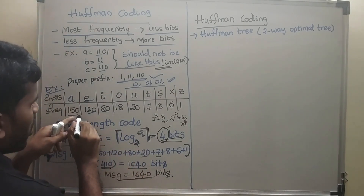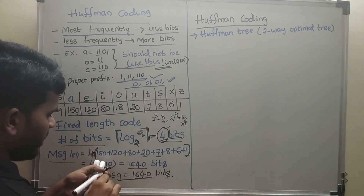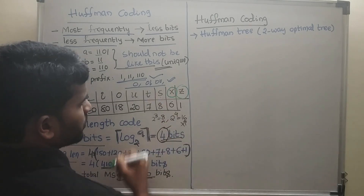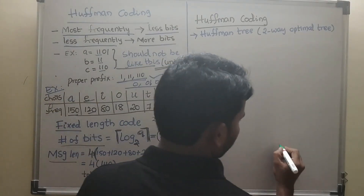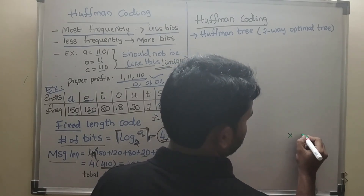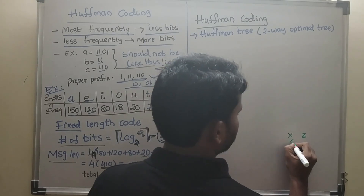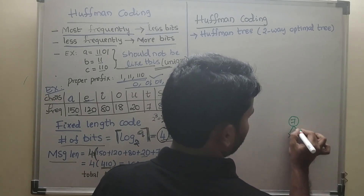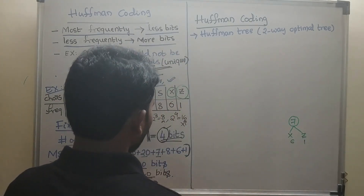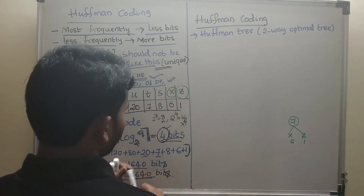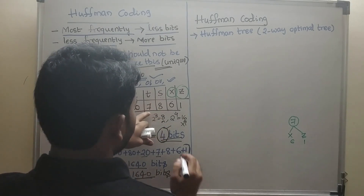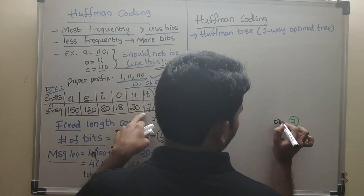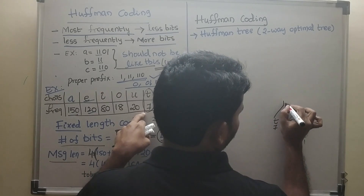Sort the characters by frequency. The least values are Z (1) and X (6), so we combine them: 6 + 1 = 7. Next in the sorted list is T (7), so we combine 7 + 7 = 14.